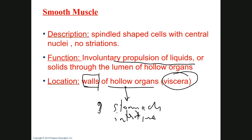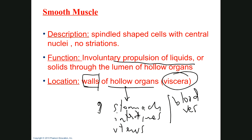Smooth muscle is located in the walls of hollow organs — the viscera. Examples include the stomach, intestines, uterus, blood vessels, and urinary bladder. Pretty much any hollow organ is going to have a smooth muscle wall.